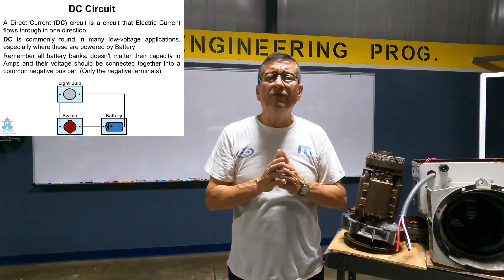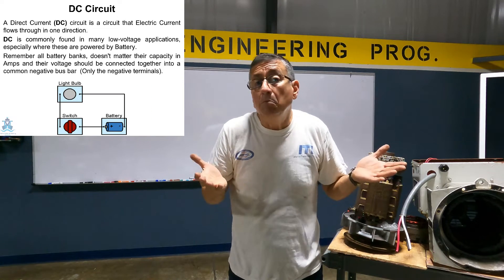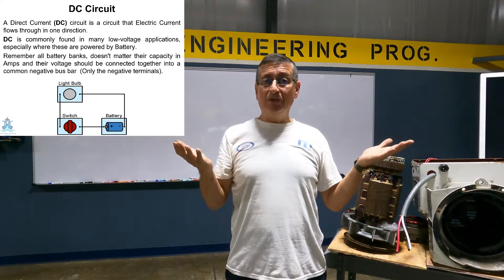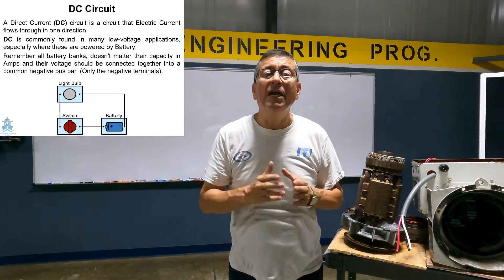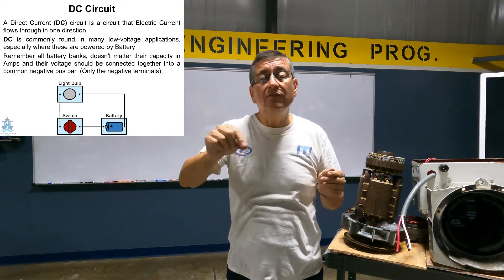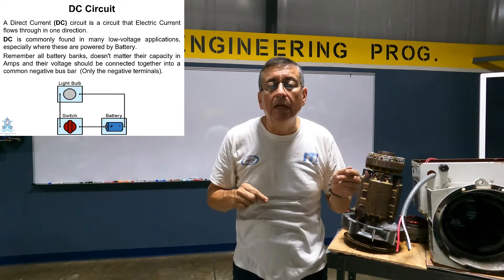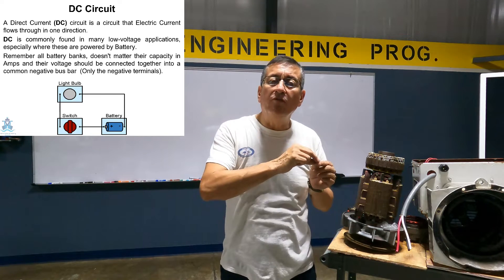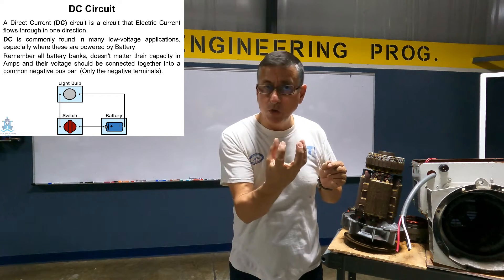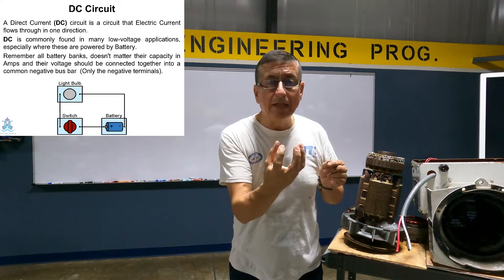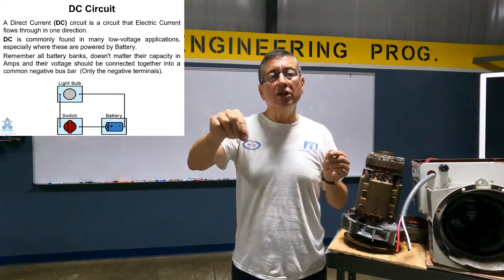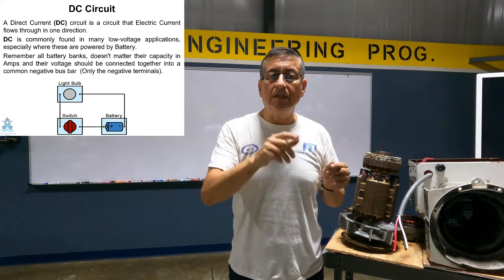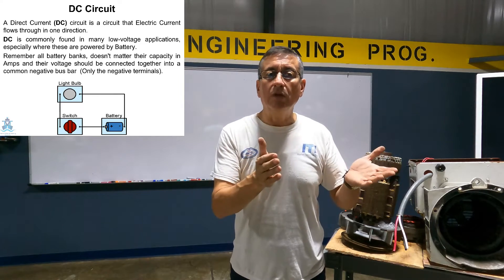What happens if you don't have the negative in the DC circuit? The circuit is not closed and the motor is not running. You need the negative to return into the battery. Some amount of current is used for the motor, and the rest of the current returns into the battery. The return is the negative in DC current.